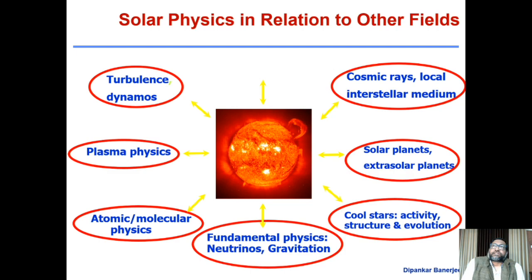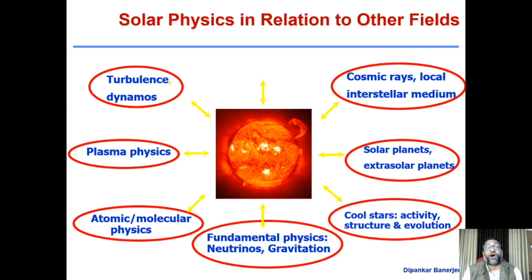The problem with a standard laboratory setup is that you are restricted by the sizes of experimental setups — very high temperature or very low density, and so on. There is always a restriction in a terrestrial environment to set up such a laboratory. In the astrophysical scenario, we have a natural laboratory, and the best one is the sun, which is closest to us. So if you want to verify plasma physics theory, the sun again provides an ideal laboratory.